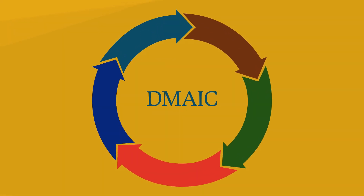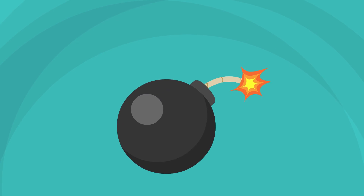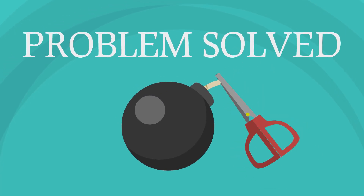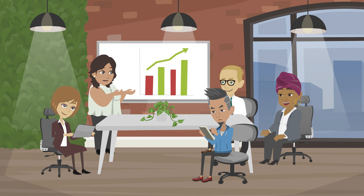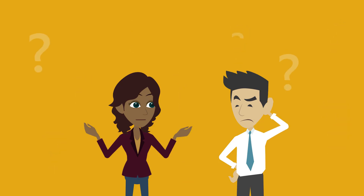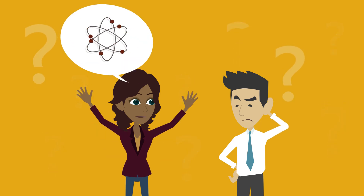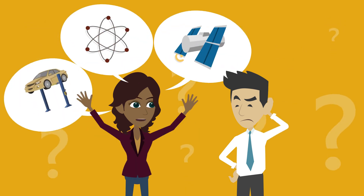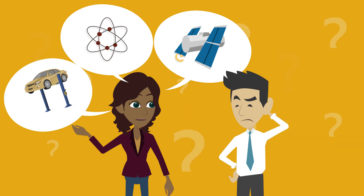DMAIC is the acronym for Define, Measure, Analyze, Improve, and Control. The DMAIC is a structured problem-solving method used in both Lean and Six Sigma. It is applied in the business world for improving processes. The DMAIC offers a thematic approach of solving problems and processes, up to and including the solutions and certainty.